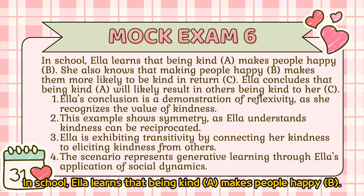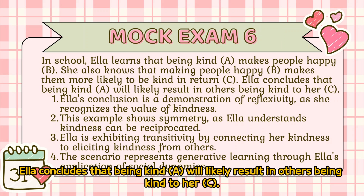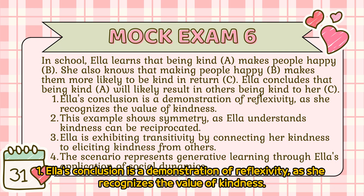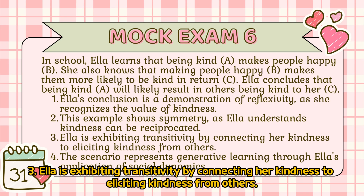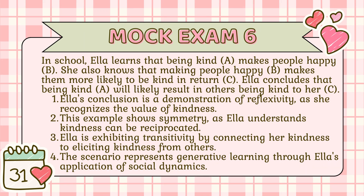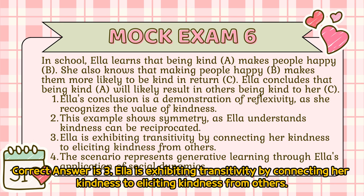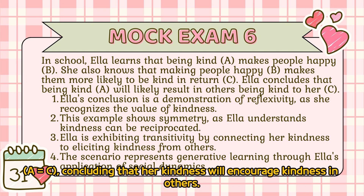Mock exam 6: In school, Ella learns that being kind makes people happy (A equals B). She also knows that making people happy makes them more likely to be kind in return (B equals C). Ella concludes that being kind will likely result in others being kind to her (A equals C). The correct answer is 3 — Ella is exhibiting transitivity by connecting her kindness to eliciting kindness from others. Transitivity is demonstrated by Ella linking two relationships, A equals B and B equals C, to understand a new one, A equals C.